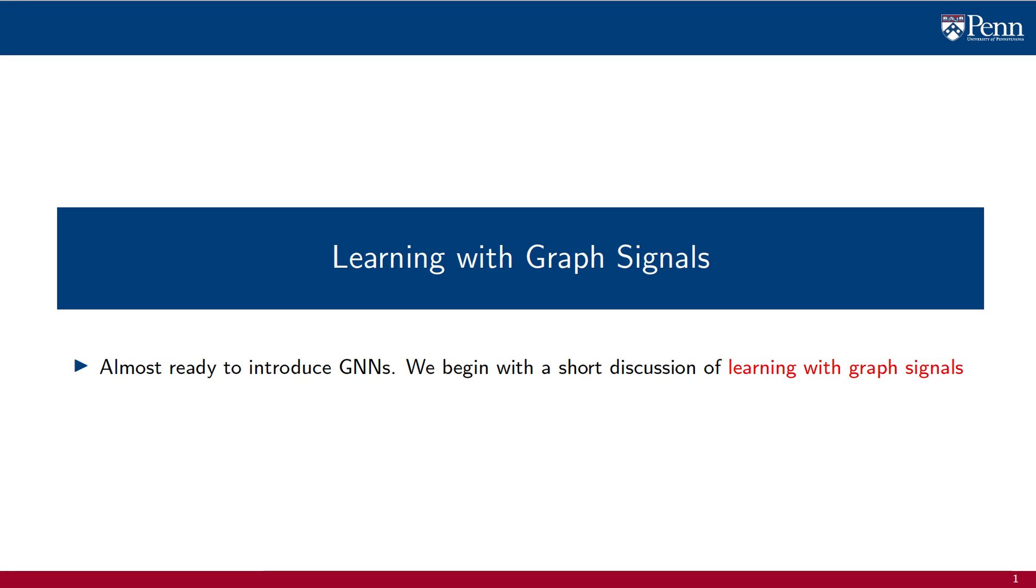This lecture is devoted to the introduction of graph neural networks. We begin with some reminders about empirical risk minimization and introduce the problem of learning with graph signals.